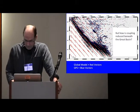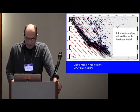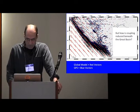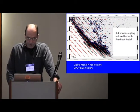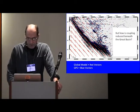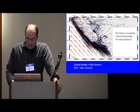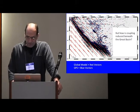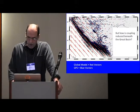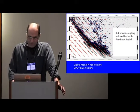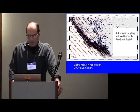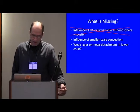If I compare the prediction from the global model, these red vectors with the GPS, again, it doesn't do bad, but I'm not happy with this because I don't know what's reducing the coupling. So what's missing in these models?